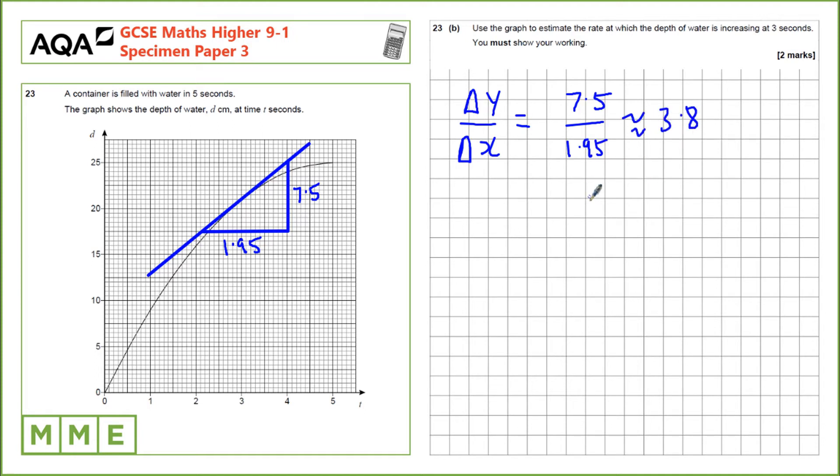The mark scheme states that what it is is whatever you've done on your graph provided the tangent is constructed correctly and that you've measured these correctly given the distance on the axes. Whatever you've done provided you've done the correct calculation change in y divided by change in x. The mark scheme accepts that provided that calculation is correct that your answer will be correct. It may be slightly different to mine but that should be fine.